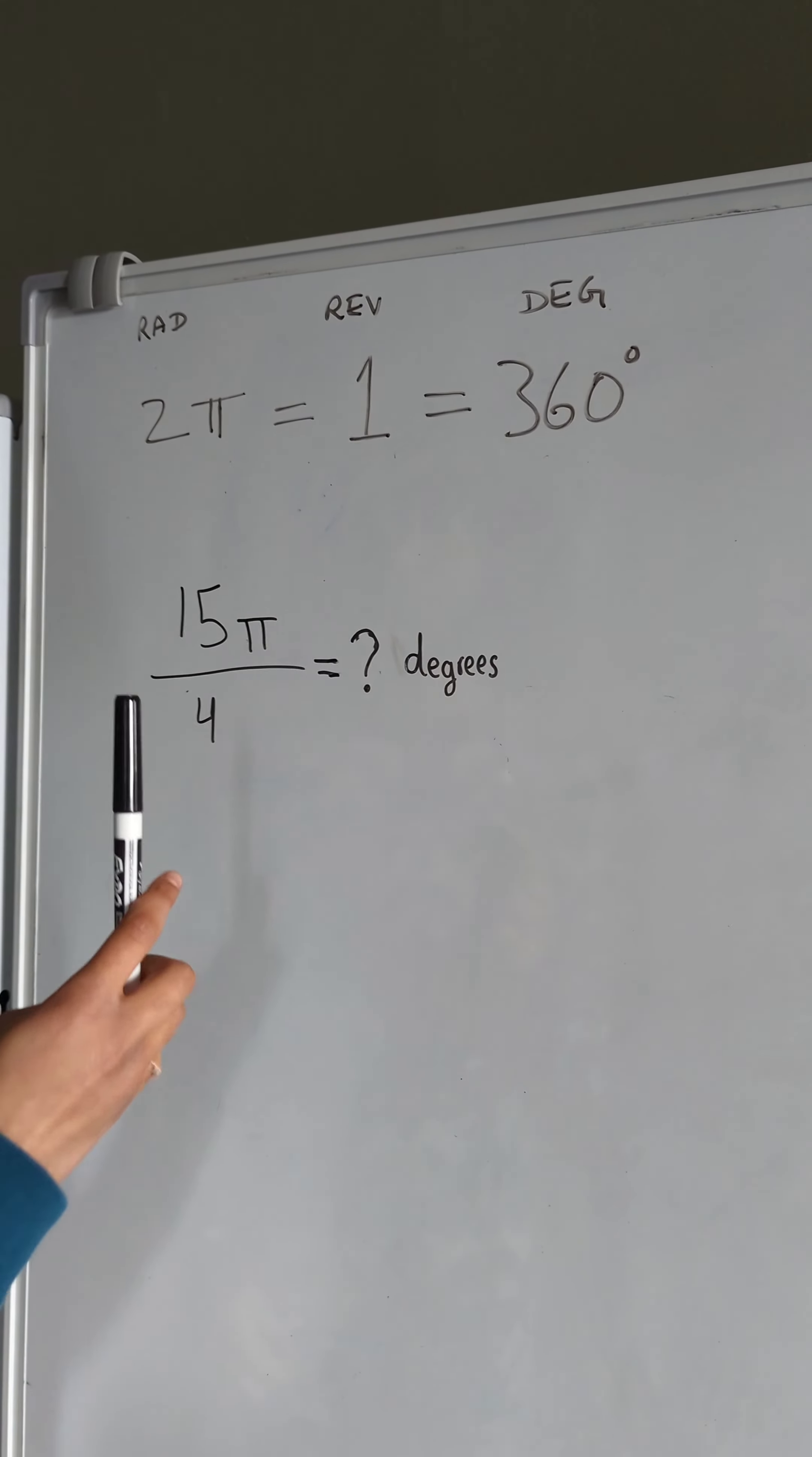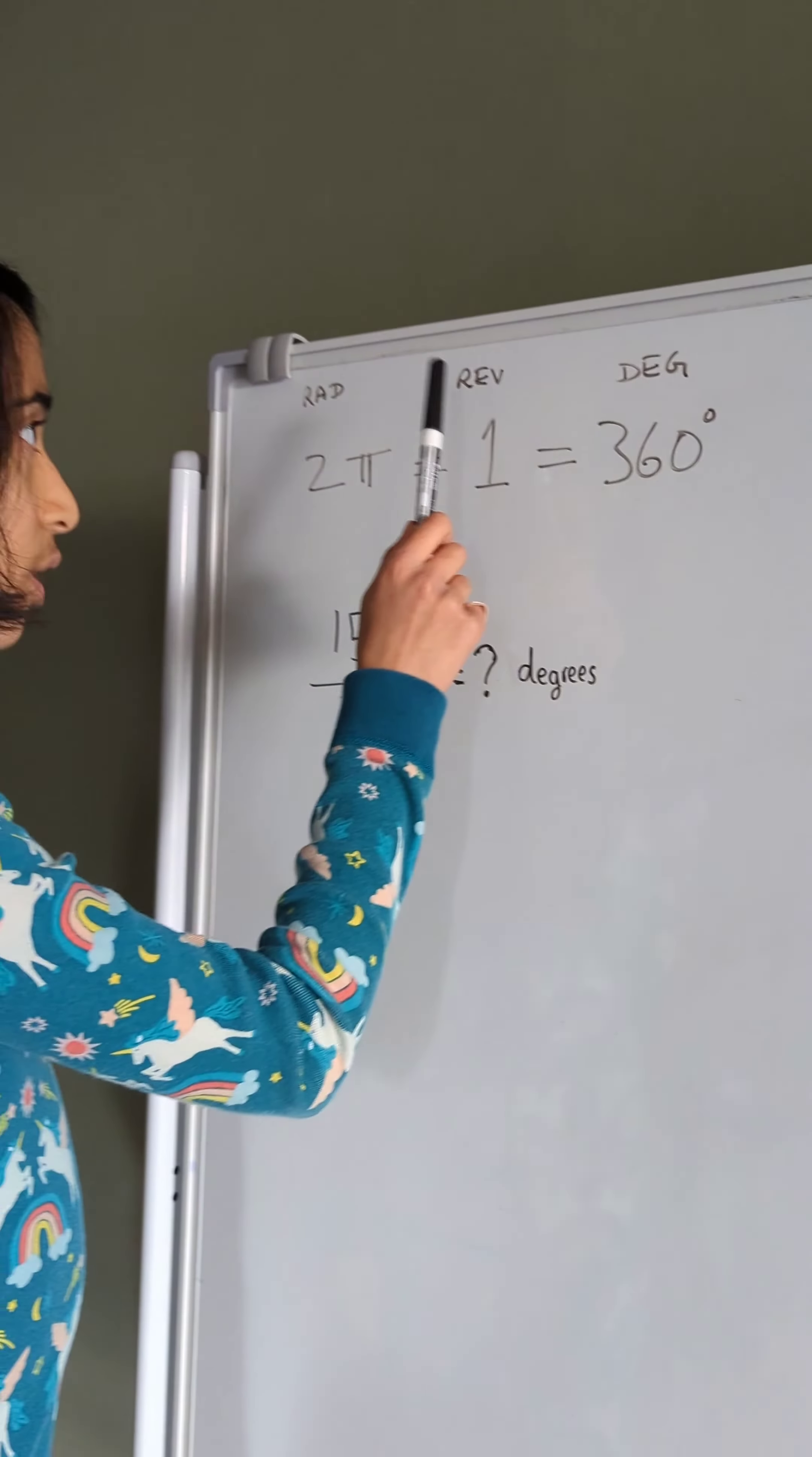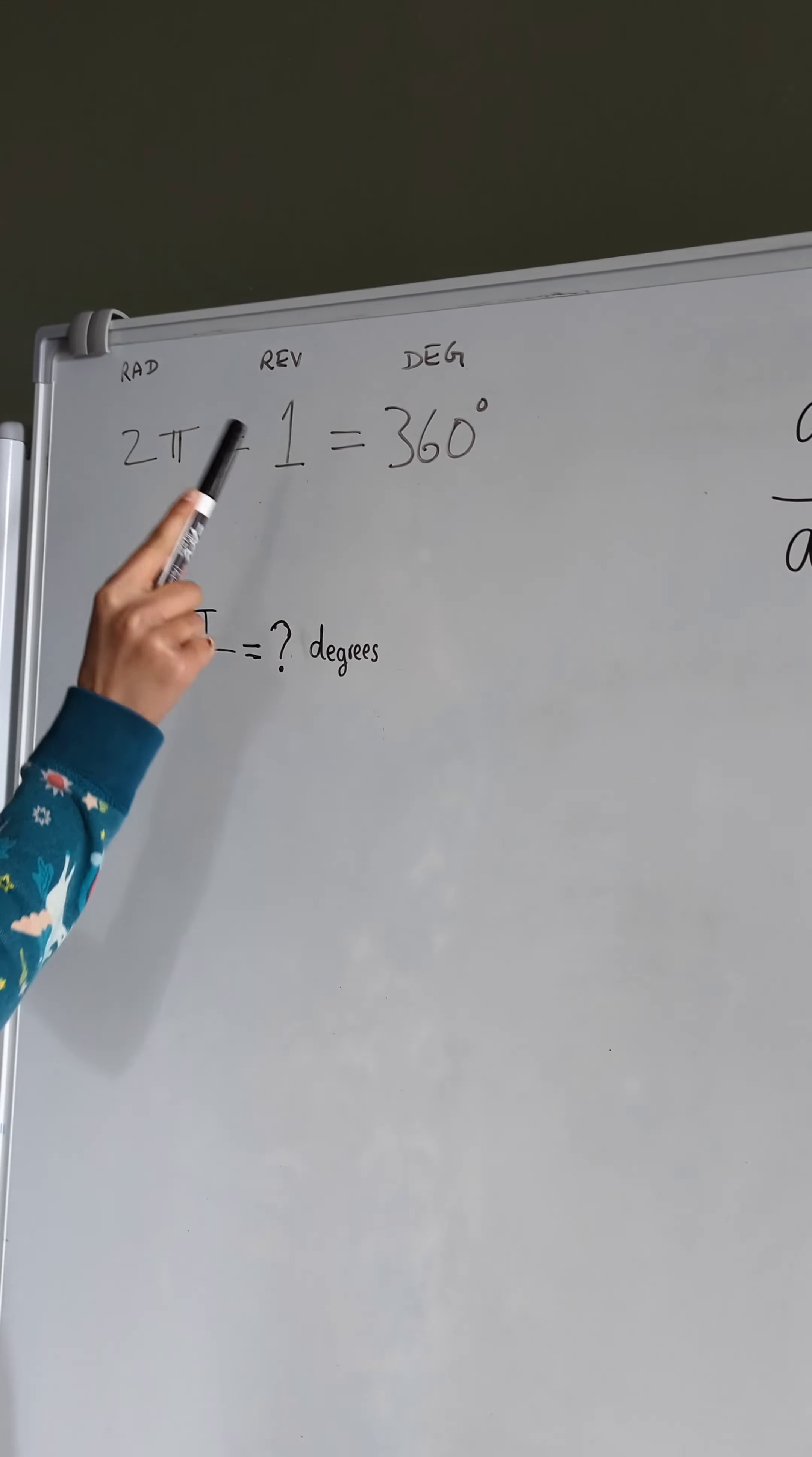Here's just a thing for you to remember: 2 pi radians is equal to 1 revolution, which is also equal to 360 degrees, so they're all equal.